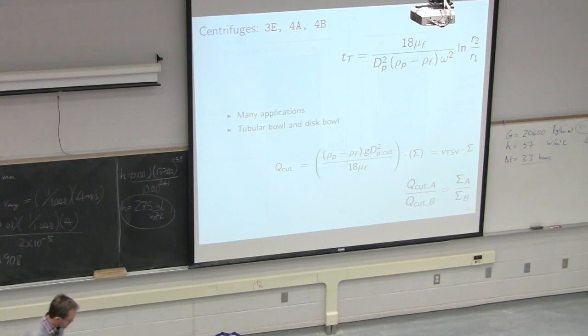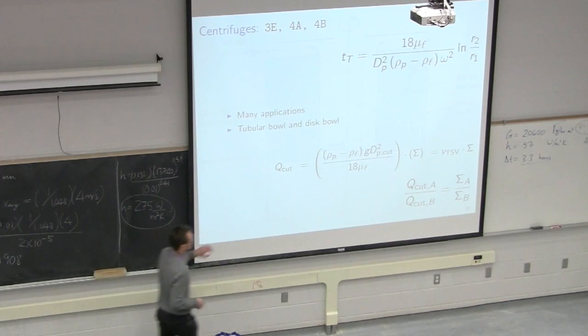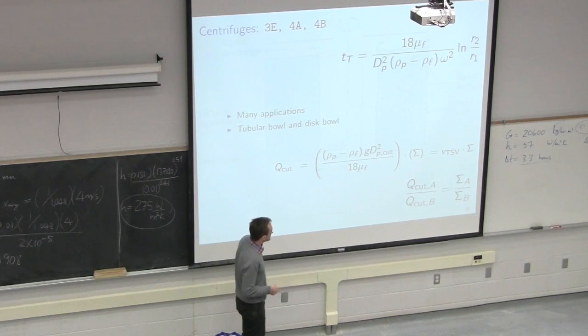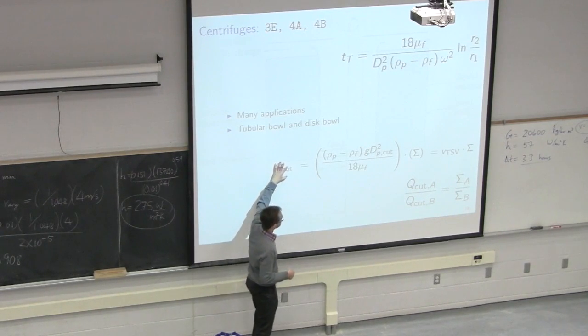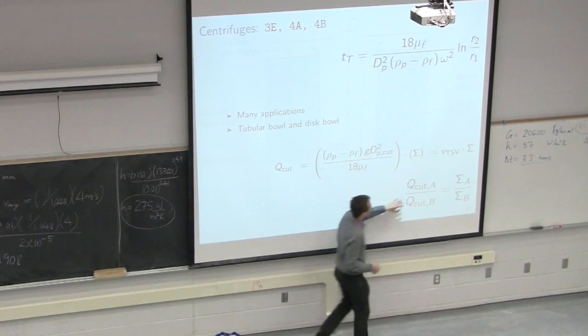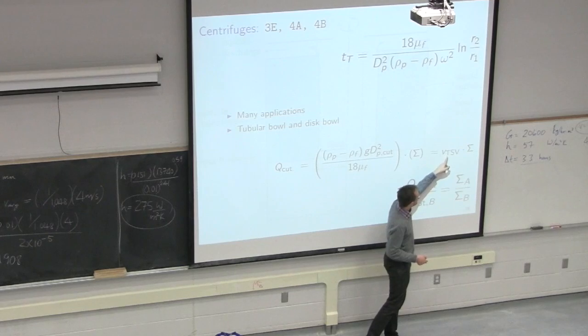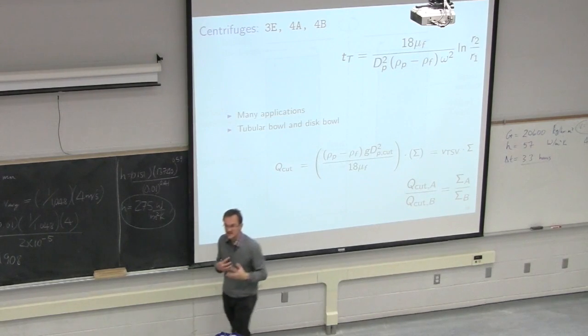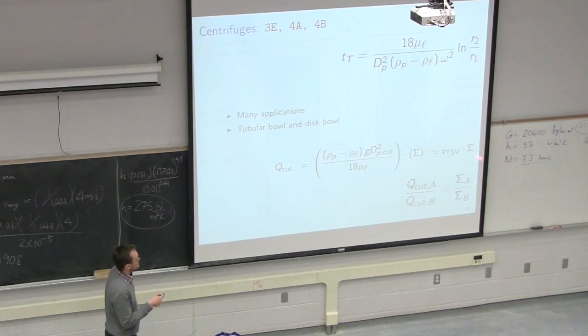Then the next topic we looked at was centrifuges. Centrifuges use that idea of settling velocity. It appears over there in that larger bracket, the terminal settling velocity. And then we multiply it by Sigma to get our flow rate through the centrifuge, our Q, our cut flow rate. So what this equation does is we can take this equation for Q cut, we can ratio it. And if we ratio it, notice I've dropped out VTSV. The reason why we can drop VTSV out is if we're settling the same solids, so the terminal settling velocity doesn't change. It's a function of the solid and the fluid that it's in.